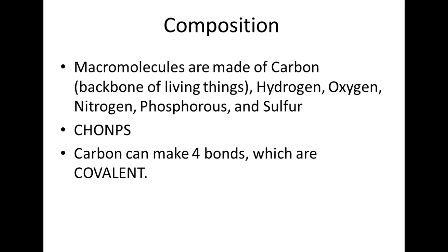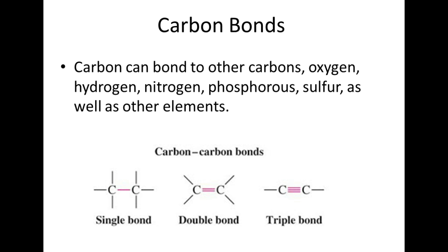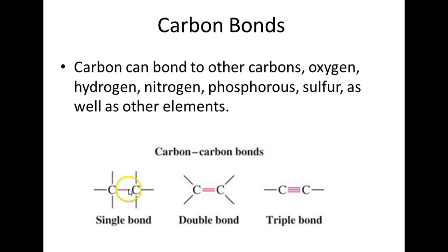Carbon can make four bonds, and they're covalent — never ionic. Covalent bonds are the ones that share electrons. Here are some examples of carbon bonds. It can bond with any other element, but it can only make four bonds. Here's a carbon, and each of these lines represents one bond — one, two, three, four. In this case, one of the bonds is with another carbon, and you will see this in all of the macromolecules.